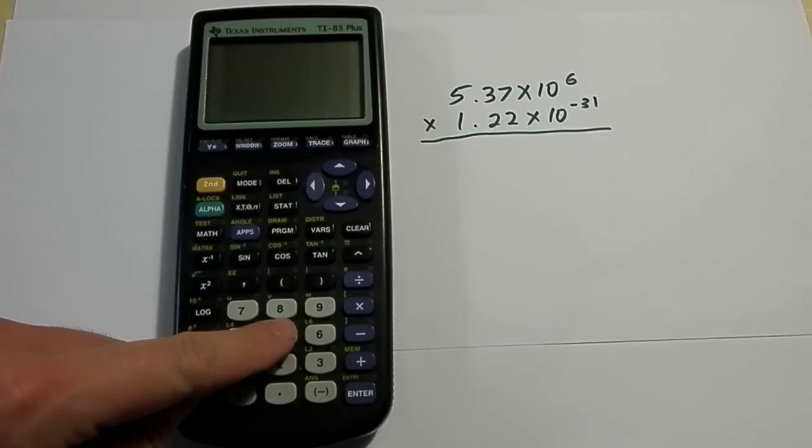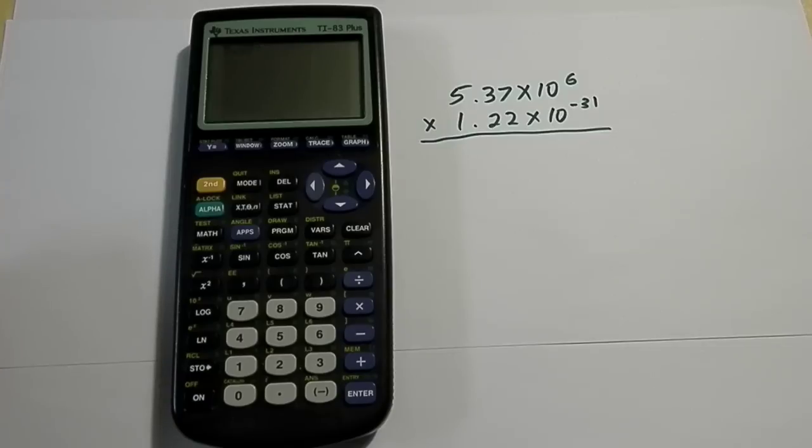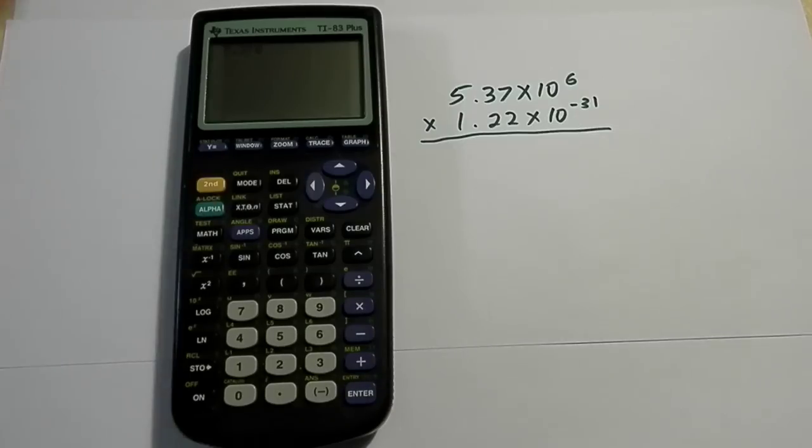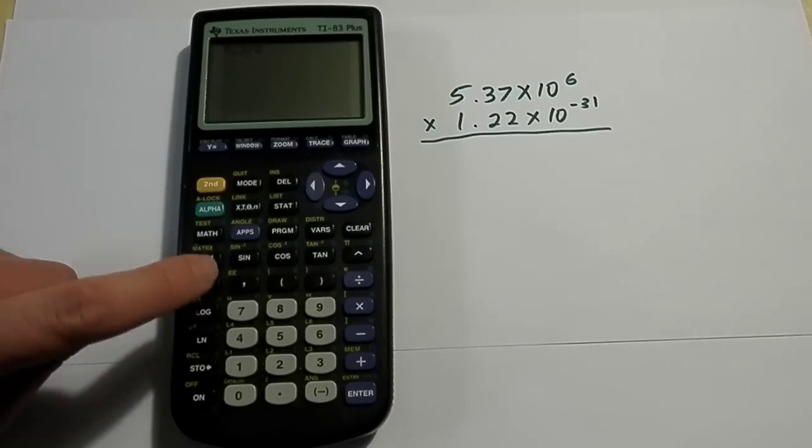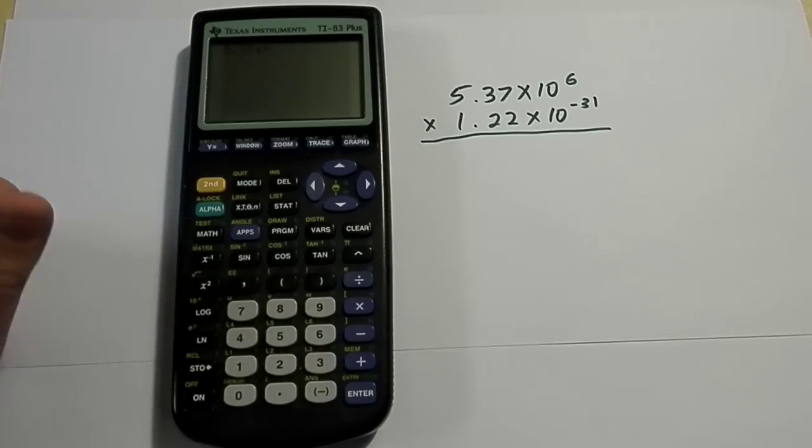So the first part is the easiest. I'm just going to type in 5.37 like I normally would. But now when I'm ready to do the scientific notation part, I first click the second button because I do want to go into second function. And then right here above the 7 button, it's a button that has a comma on it. The second function of it is EE. And that's the part that goes into scientific notation. As soon as I click that button on the display, I get a capitalized E. The calculator knows that I'm doing scientific notation.